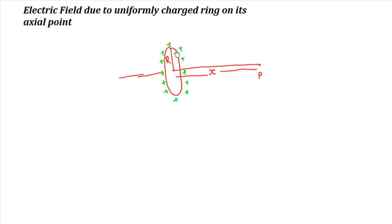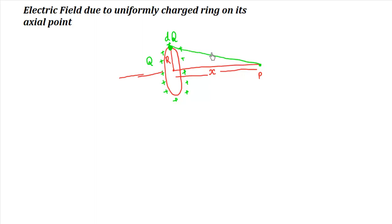Every part, every portion of the charge of this ring will create some electric field at this point. The vector sum of electric field due to all these charges at point P will be the resultant field. I assume total charge on the ring is Q, and here I have taken a small charge element — let it be dQ — at separation R.